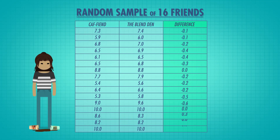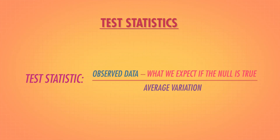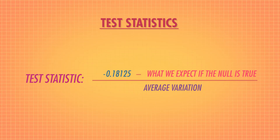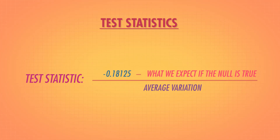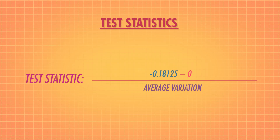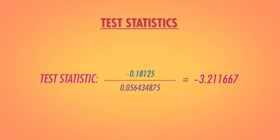The mean scores are still affected by variation due to individual coffee preferences, but since the exact same people are in both groups, we can extract that variation and throw it away. One way to do this is to make a difference score for each person — this tells you how much more they like coffee from Caffeined than coffee from The Blend In. Now that we have only one list of values — the difference scores — our matched pairs t-test will look surprisingly similar to the one-sample t-test. We observed a mean difference of negative .18125, which means that on average, people rated coffee from The Blend In .18125 points higher than coffee from Caffeined. The null hypothesis is that there's no difference, so we'd expect our mean difference to be zero, and our measure of average variation is the standard error of the difference scores. Putting it together, we get a t-statistic of about negative 3.212.